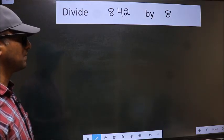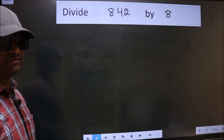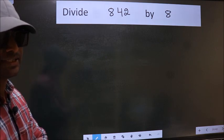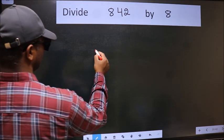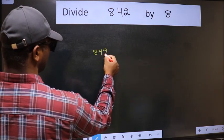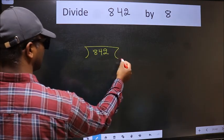Divide 842 by 8. To do this division, we should frame it in this way. 842 here and 8 here.